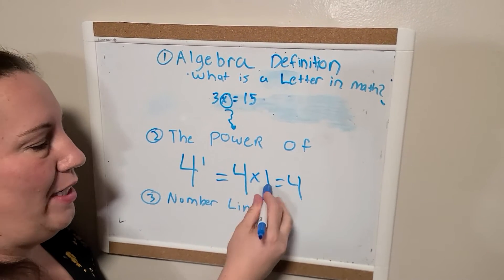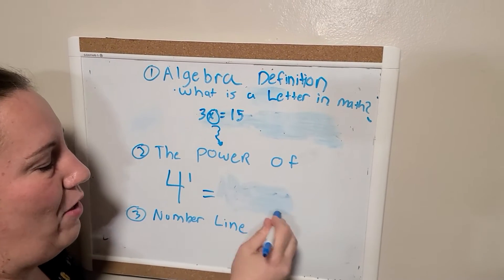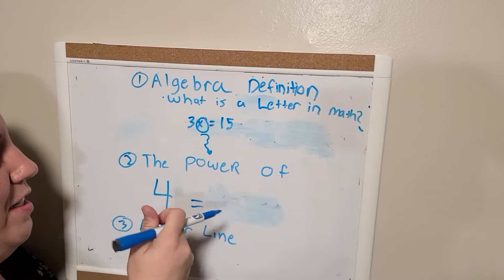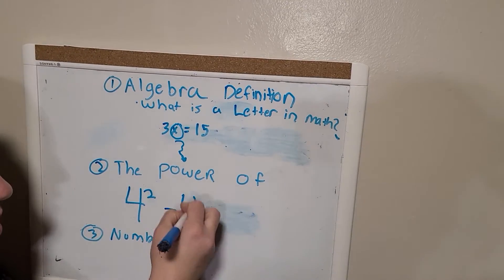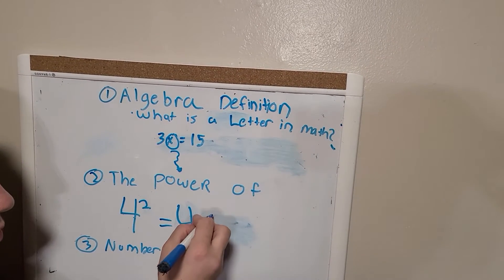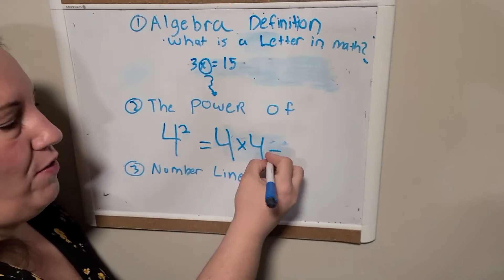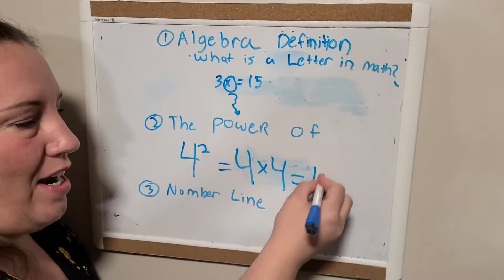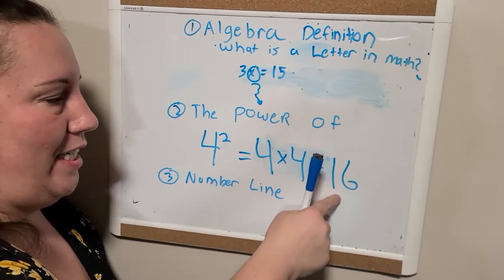Now it gets a little bit more tricky with the next one. What I'm going to do here is 4 to the power of 2. What this means is it's 4 times the same thing. So it's 4 times 4. What is 4 times 4? It's 16, right? So the answer of 4 to the second power is 16.